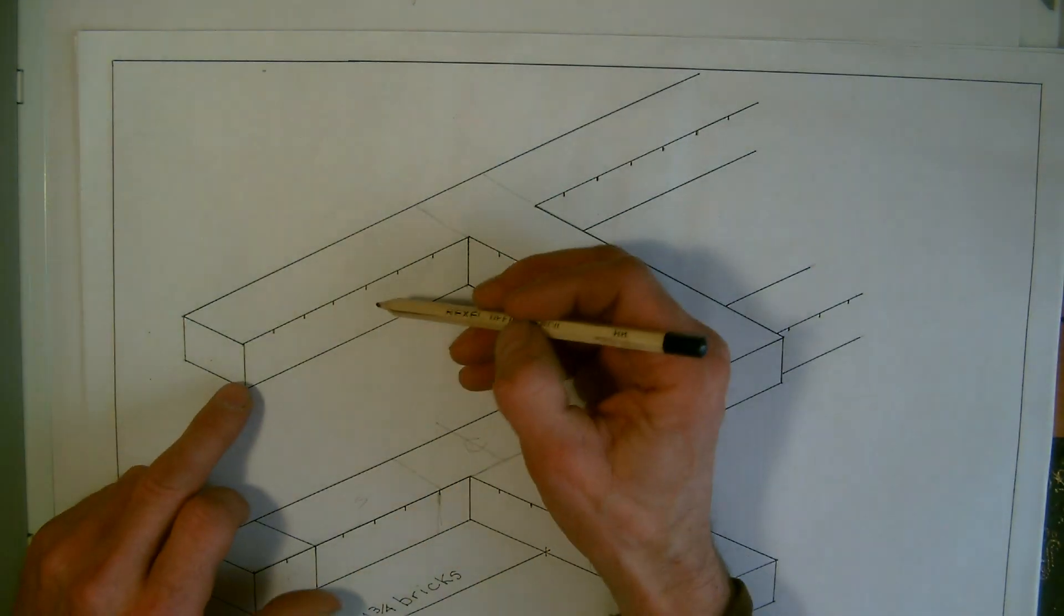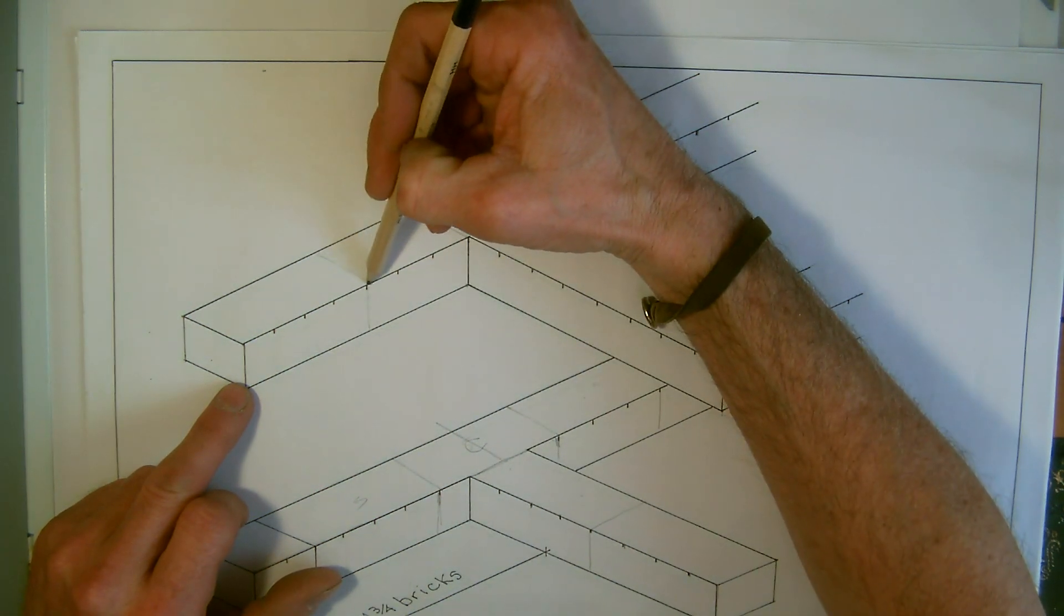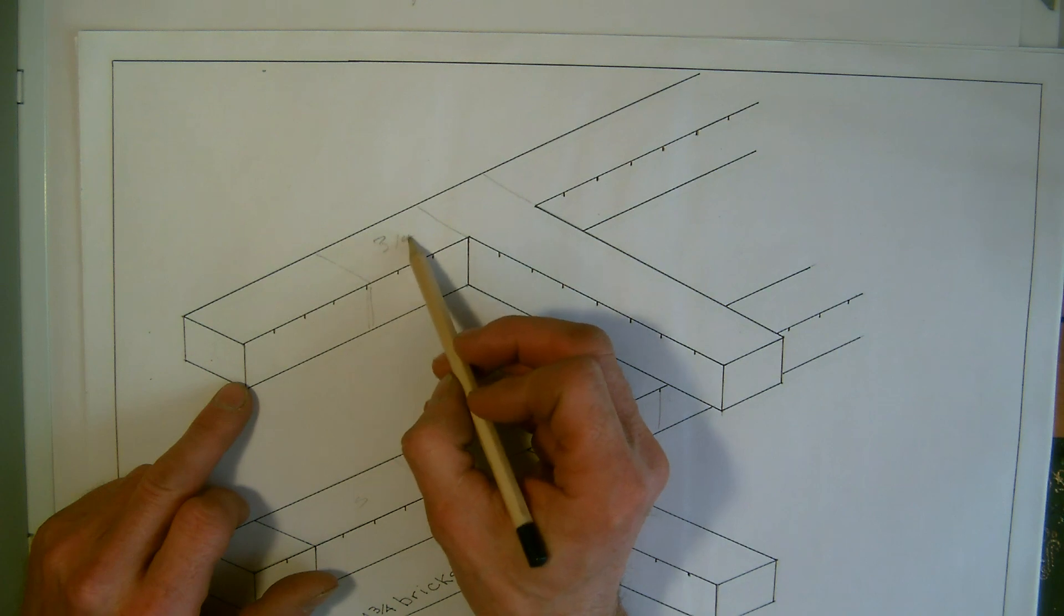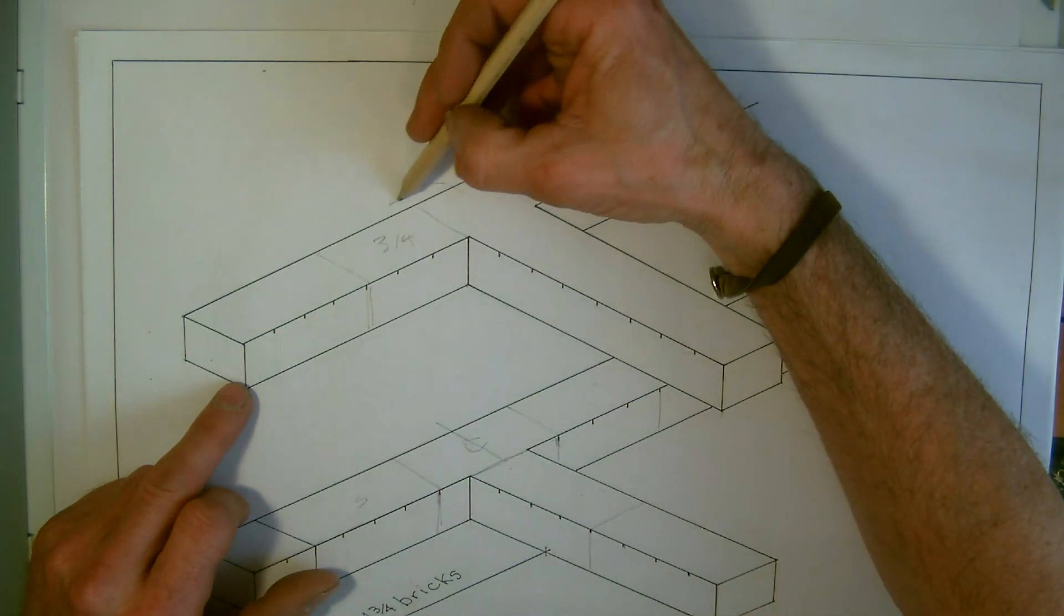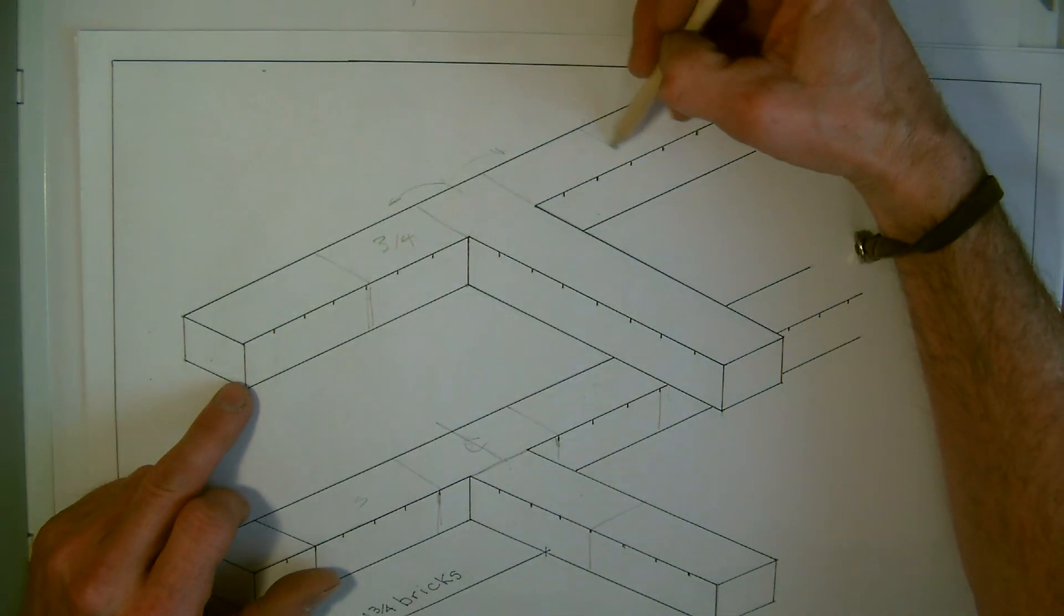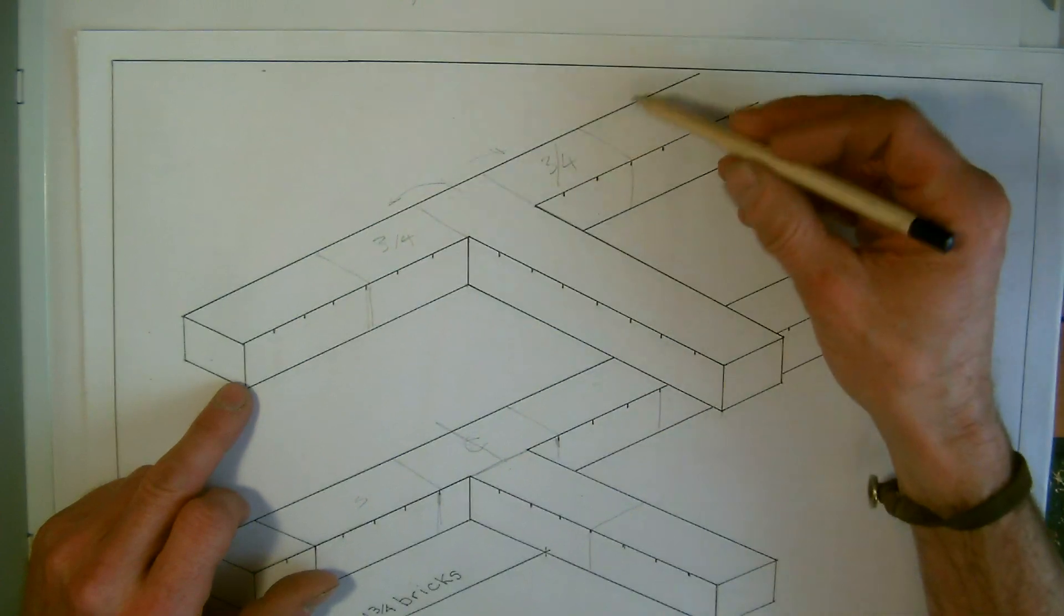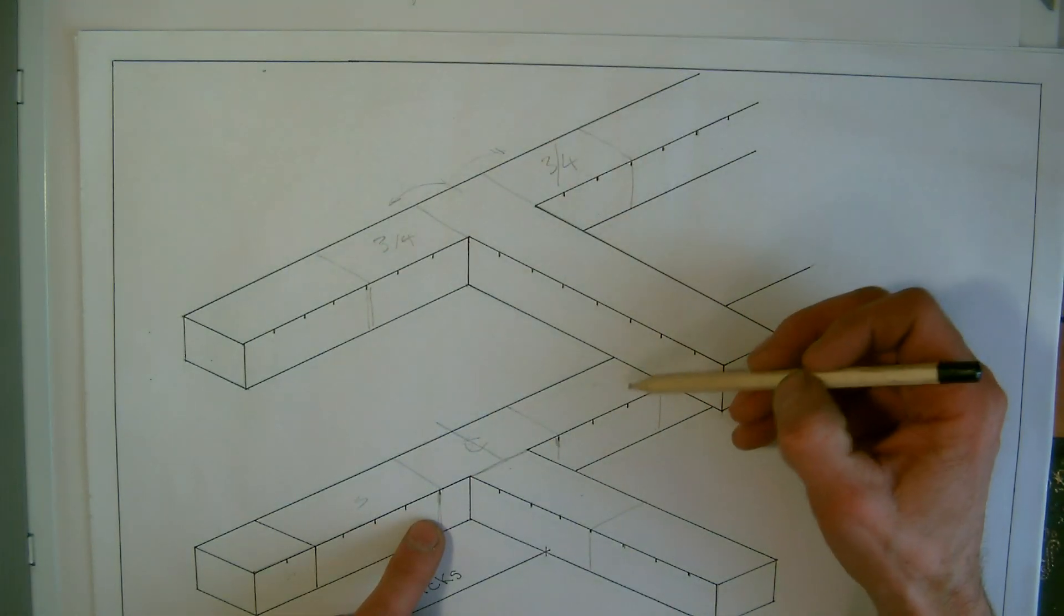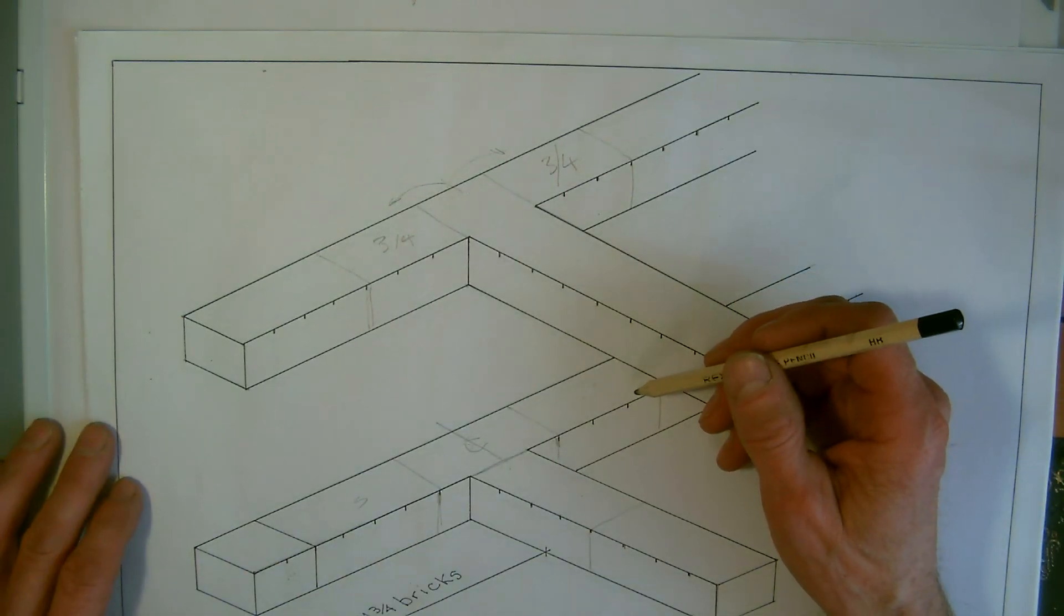So we had a half on the first course, so the second course we want to have a stretcher, again just to maintain half bond. And that's left us with a three-quarter. With the rules of bonding, we know whatever we had this side, we must have this side. So we know that we have a three-quarter there as well. And that three-quarter, the two three-quarters and a half, obviously would bring us back to being half bond on there.